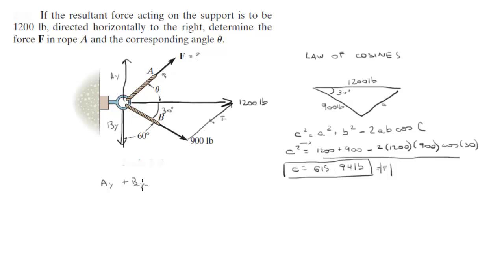F y component plus B y component is equal to 0. So the F component is going to be F, which we figured out already, 615.94 sin of theta, minus, because B is going down in the negative y direction, 900 sin of 30 is equal to 0.